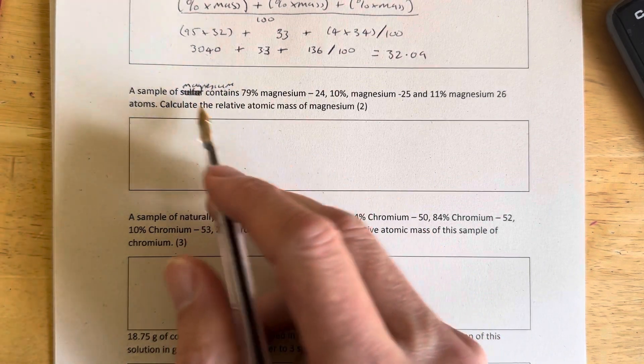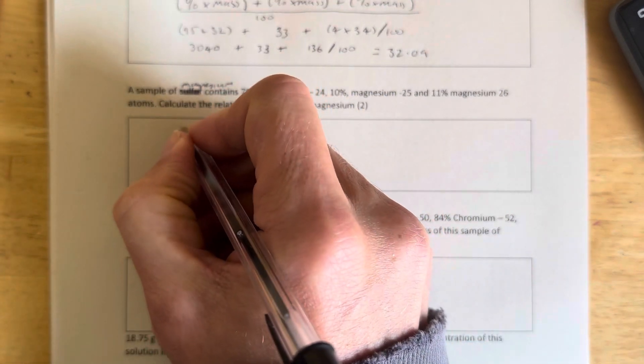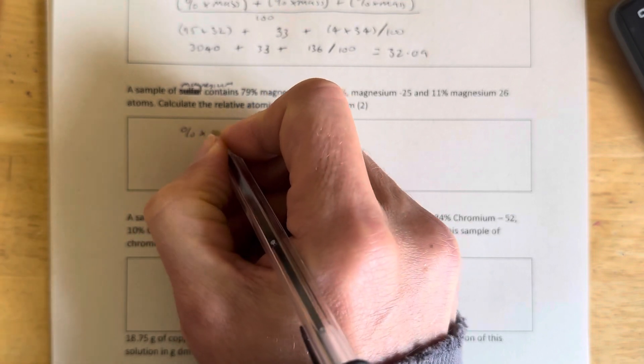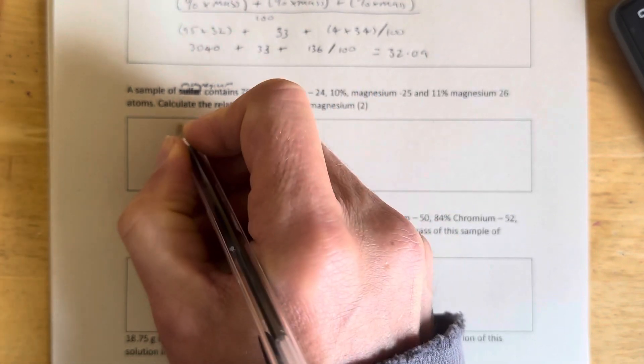This sample of magnesium has three different isotopes in it. So we need to use this formula: percentage times mass. The percentage abundance of an isotope multiplied by the mass number of that isotope.